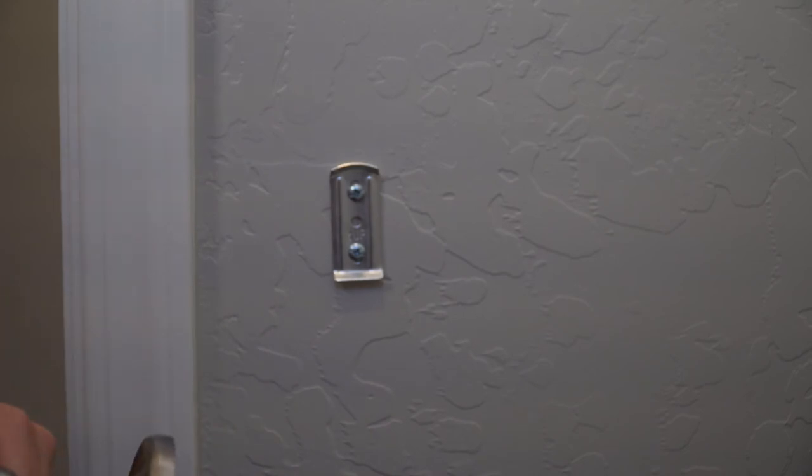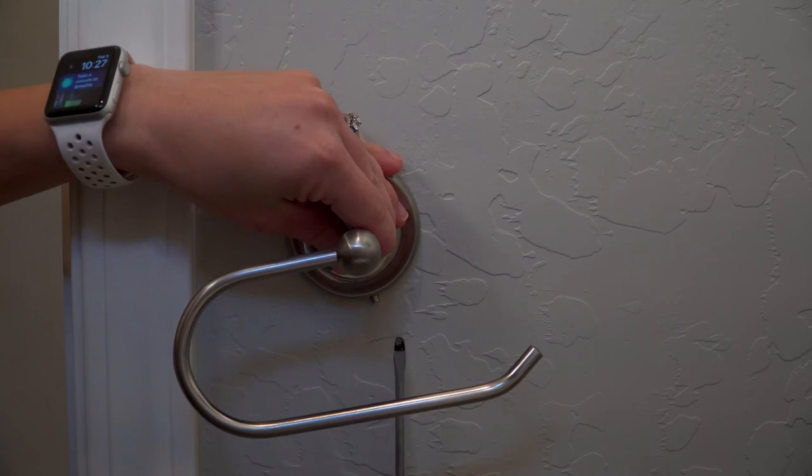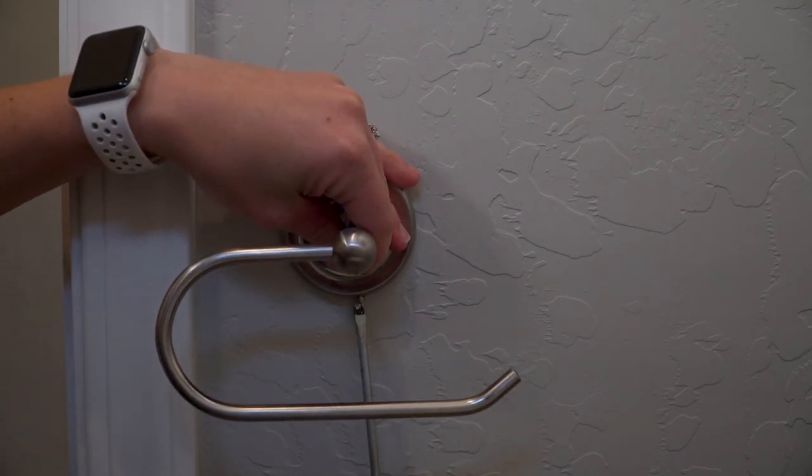When reinstalling, hang the toilet paper holder on the wall anchor then place it flush against the wall. Insert the small screw under the toilet paper holder and tighten by turning it clockwise.